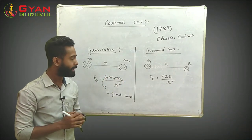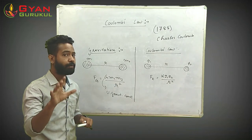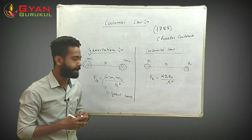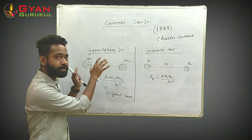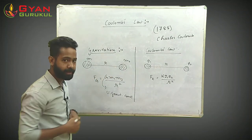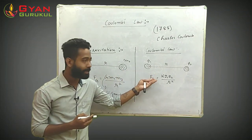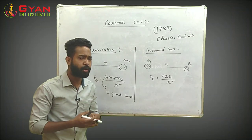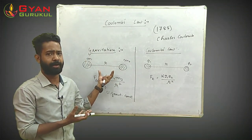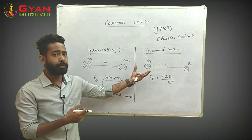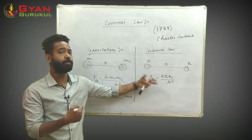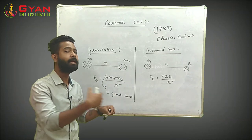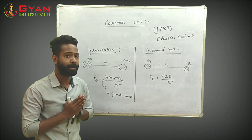Both formulas are structurally the same, but there are important differences. Gravitational force is only attractive — it can never be repulsive — whereas the electrostatic force can be both attractive and repulsive. These differences raise interesting questions, though some go beyond the standard syllabus.